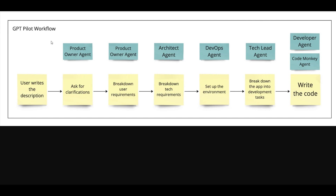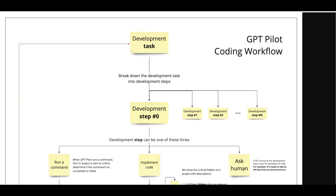Technically, GPT Pilot is built out of multiple agents — for example, OpenAI-based GPT-4 agents. You write down what you want to create, talk about your app, and it will ask for clarification if needed. It then breaks down what steps are needed, what coding needs to be done, what environment needs to be set up. After all tasks are defined, it writes the code and can even execute it to make sure the app is working. Each step is handled by multiple agents — we have a tech lead agent and an architect agent that discuss the breakdown of steps.